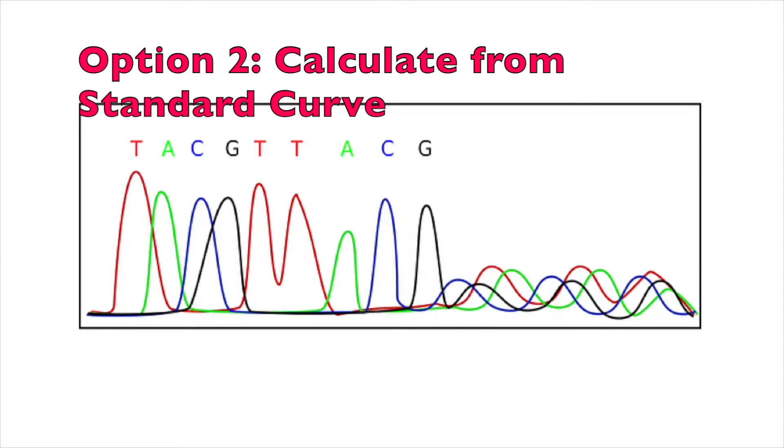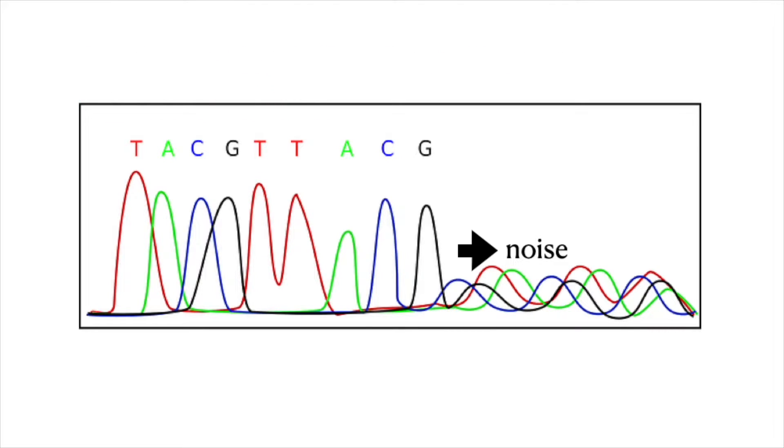Another way for determining your limit of detection and your limit of quantitation, other than measuring blanks and setting your detection limit as three times or your quantitation limit as ten times the signal that you get from blanks, you could actually use your standard curve.